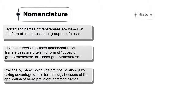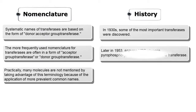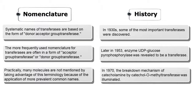In the 1930s, some of the most important transferases were discovered. Later in 1953, the enzyme UDP-glucose pyrophosphorylase was revealed to be a transferase. In 1970, the breakdown mechanism of catecholamines by catechol-O-methyltransferase was illuminated.